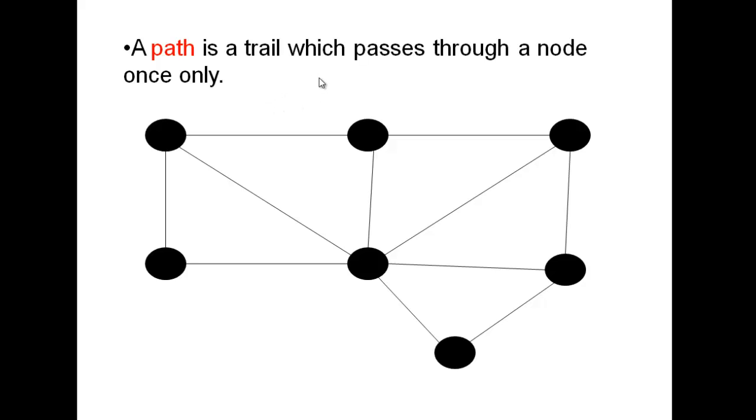A path is the same as a trail, but now we can only pass through a node once. So now we can't repeat the nodes.